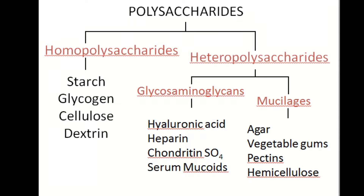Heteropolysaccharides are divided into two major groups. One is termed as glycosaminoglycans, or GAGs. The other is mucilages. Examples of glycosaminoglycans include hyaluronic acid, heparin, and chondroitin sulfate. Serum mucoids are also included. Mucilages have their own set of examples.